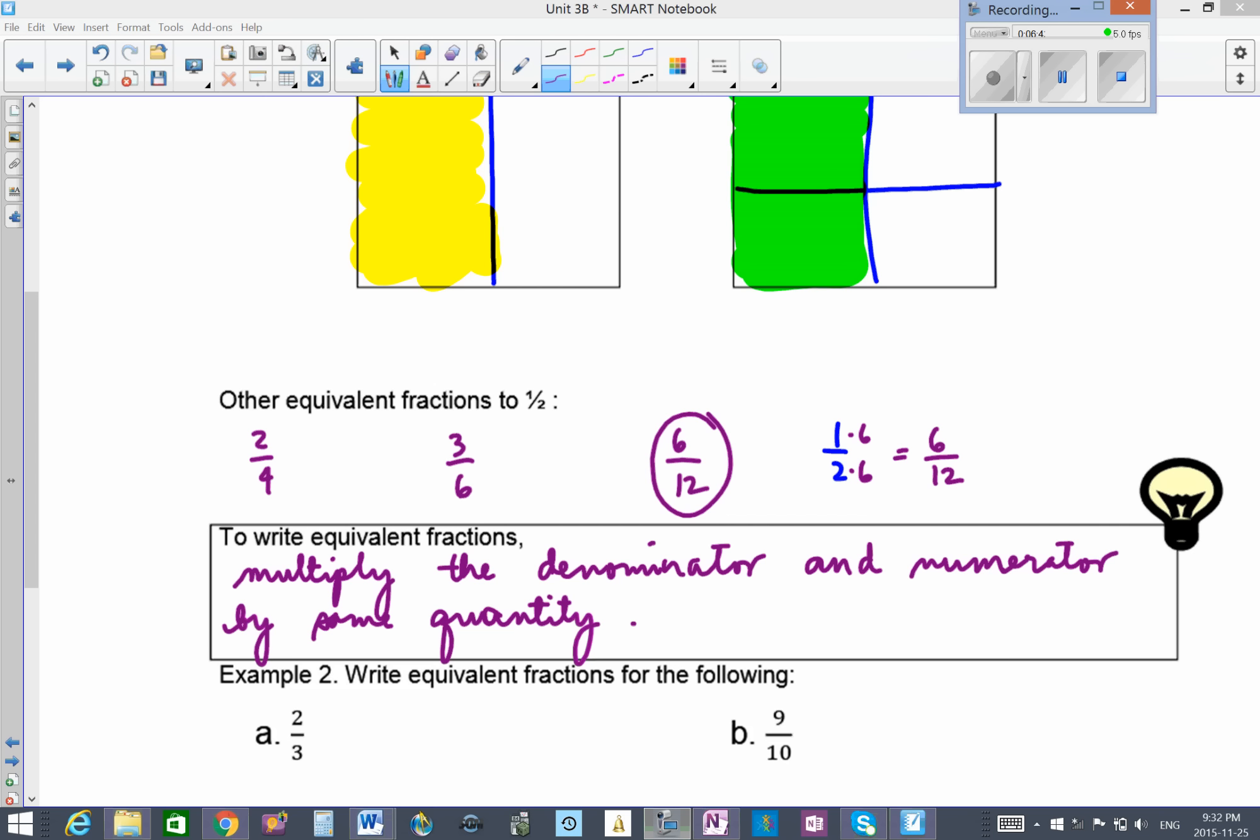Example 2: Write equivalent fractions for the following. Very simple, we just multiply by any random quantity here. Let's say times 4 times 4 here. So that would be 8 over 12. Two thirds is also the same as 8 over 12. What about this one? Let's say we times this by 2 by 2. So that's 18 over 20. You can write some more equivalent fractions, but that's how we generate equivalent fractions.